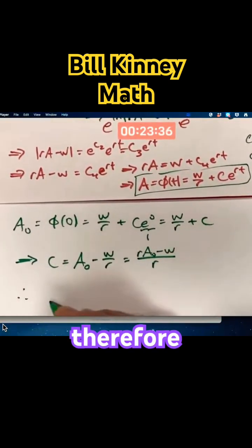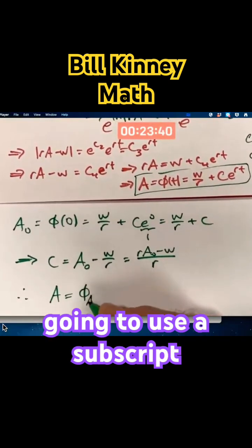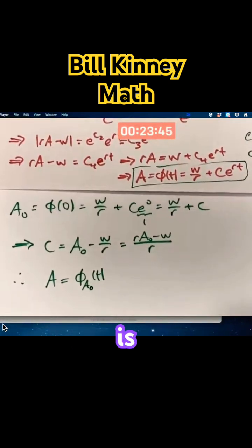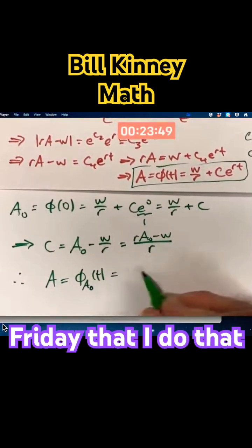And therefore, a is phi of t, and now I'm gonna use a subscript, phi sub a-naught of t, to emphasize what the initial condition is. I will explain why maybe on Friday that I do that.